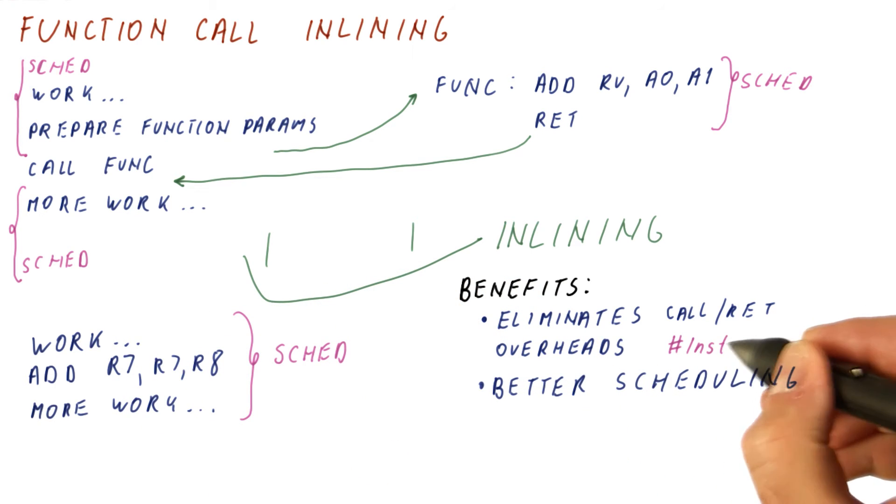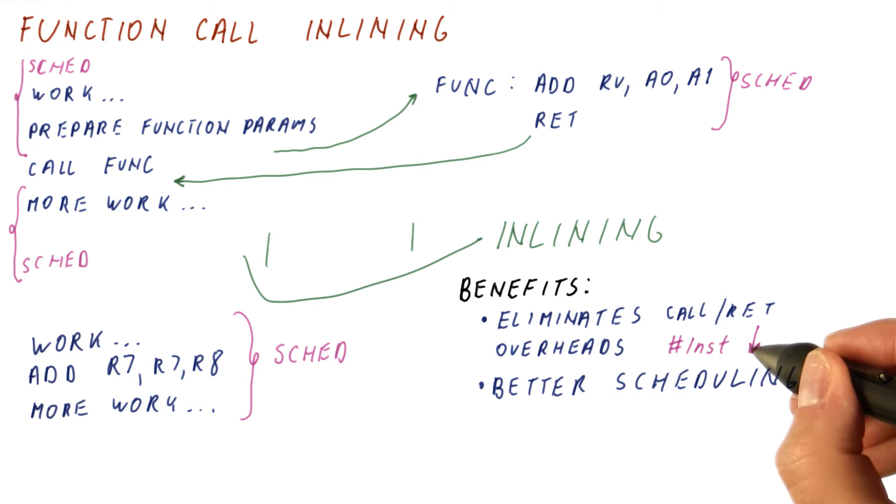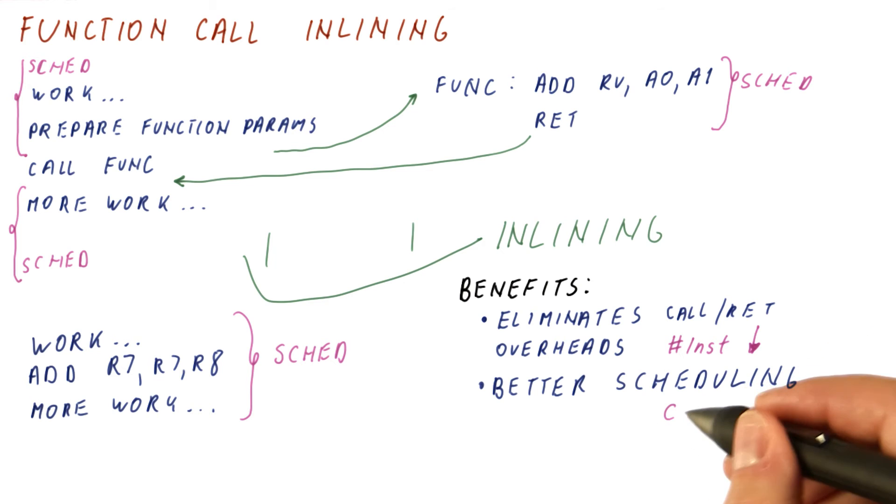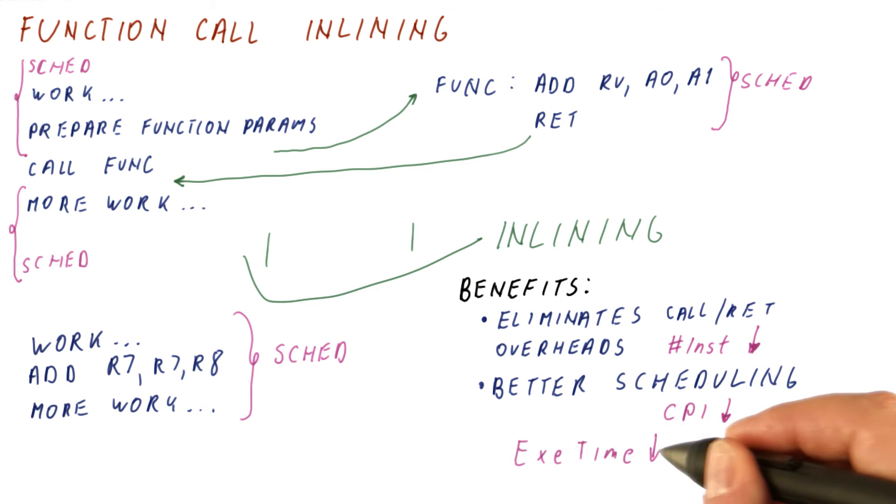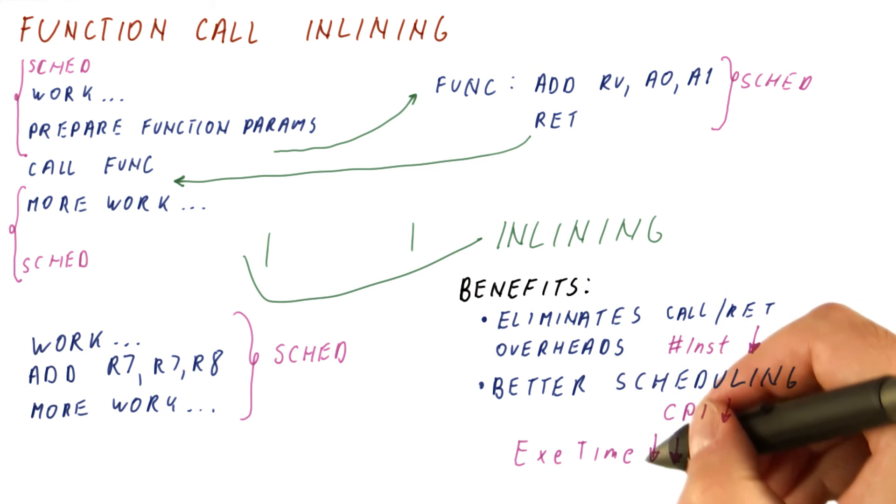Just like loop unrolling, the elimination of the overheads for calling, returning, and so on will reduce the number of instructions. The better scheduling will let us reduce the CPI, and that means we can usually improve the execution time by quite a bit.